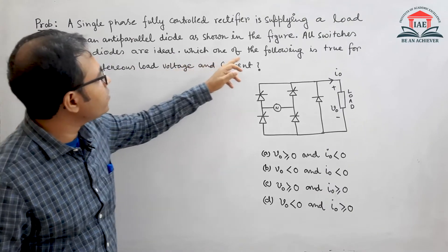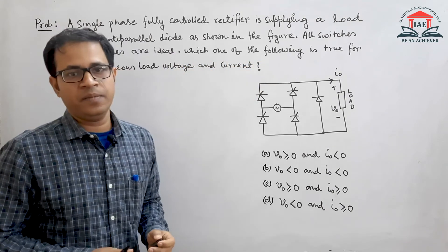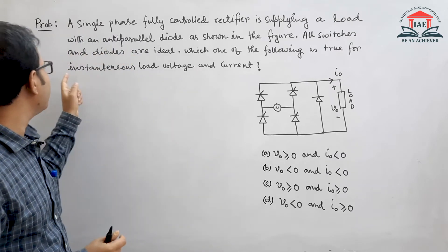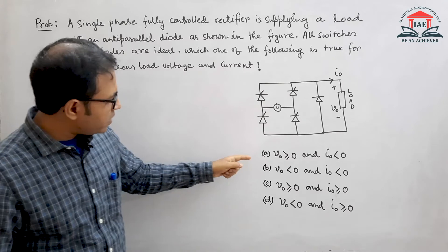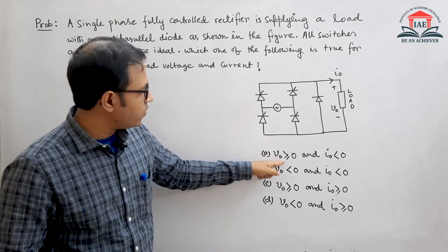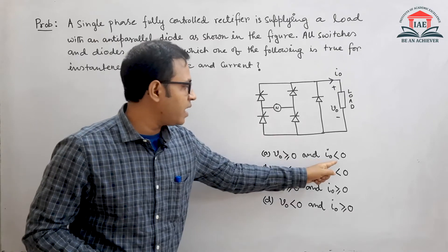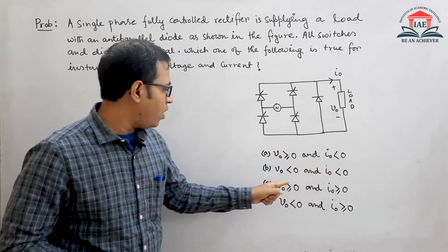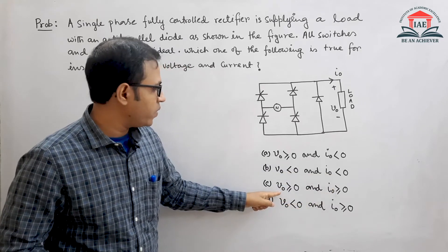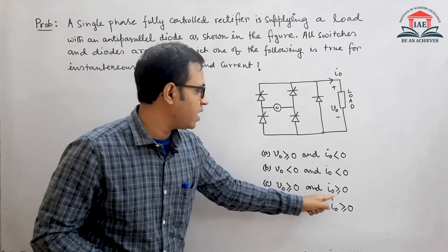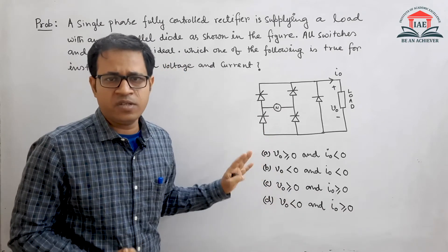They are asking which of the following is true for the instantaneous load voltage and current. Here they are asking about the instantaneous voltage. The answers are given as: VO ≥ 0 and IO ≤ 0, or VO < 0 or IO < 0, or VO ≥ 0 and IO ≥ 0, and so on. We have to find out which option is correct.